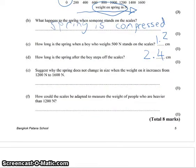Suggest why the spring does not change in size when the weight on it increases from 1,200 to 1,600 Newtons. It might seem strange that the length doesn't change at that point, but the idea here is that the spring is compressed so far that the coils can't compress any further because they're already touching each other. So we'll say the coils are touching and that the spring cannot be compressed anymore.